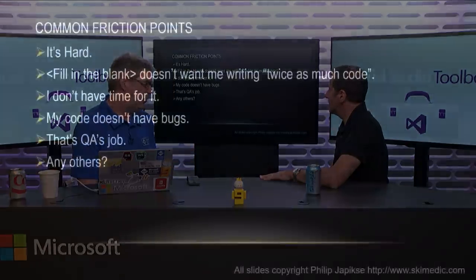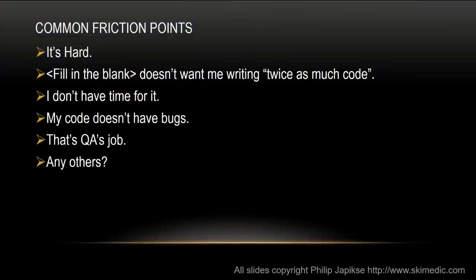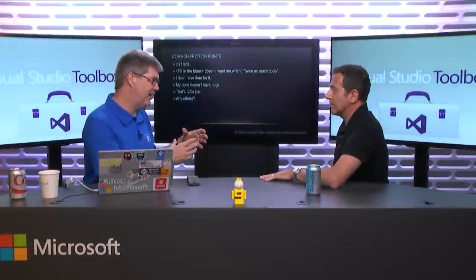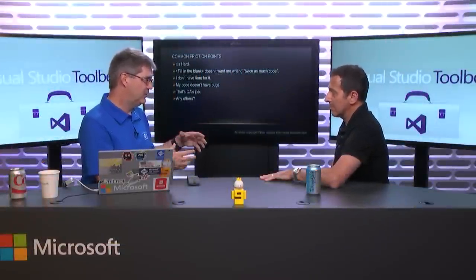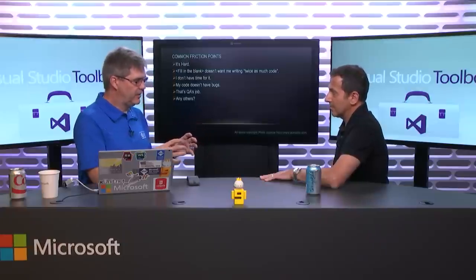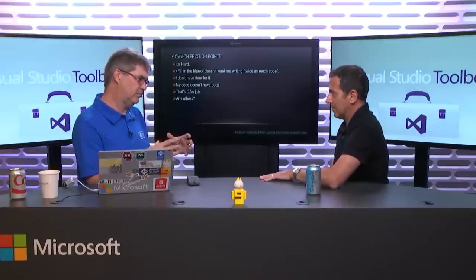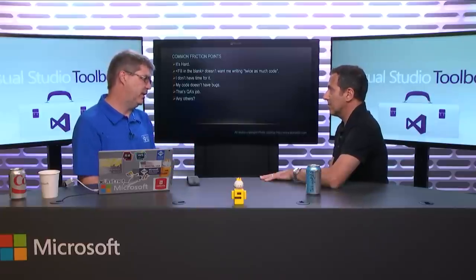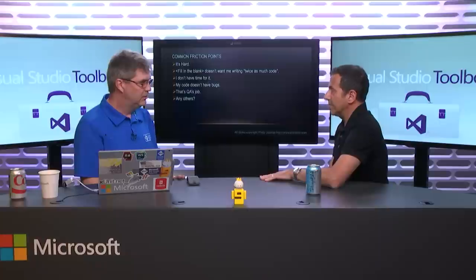These are some common friction points. First, people say it's hard. I always say I work very hard upfront so I can be lazy down the road. It took me a while to really understand unit testing. It's a pendulum — I finally get unit testing, the pendulum swings the other way, and now I'm testing everything. I'm testing properties in .NET, which I don't need to do. I have to assume that the framework works. So there's a sweet spot in the middle where you're testing the right stuff, and that takes time to get there. But once you're there, you have all these benefits.